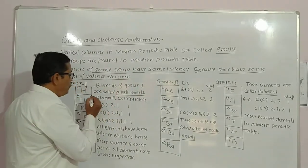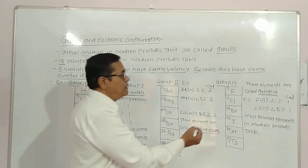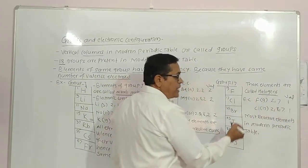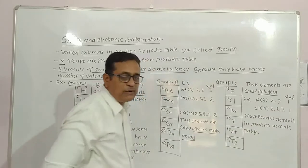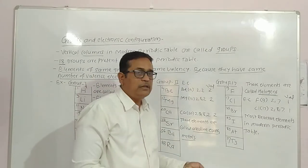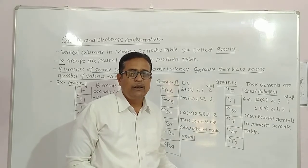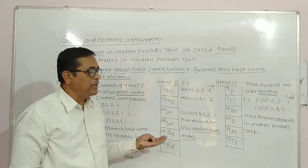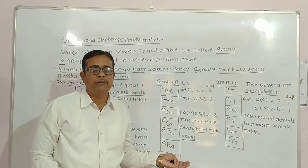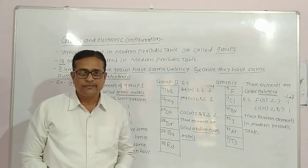Elements of Group 1 have a losing valence of 1, while elements of Group 17 (halogens) have a gaining valence of 1. In this way we have studied the groups in the Modern Periodic Table, their electronic configurations, and their properties.